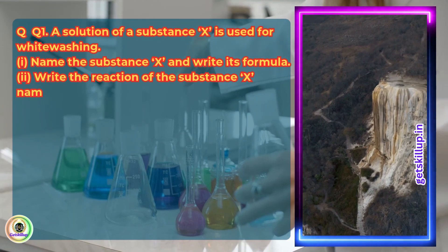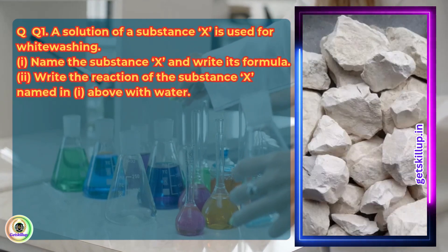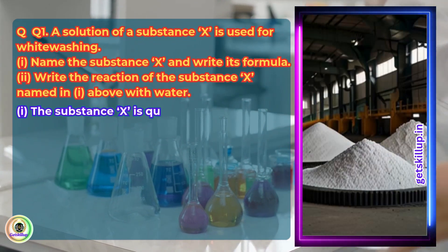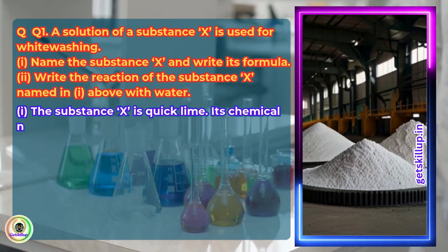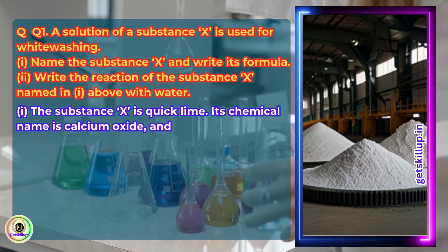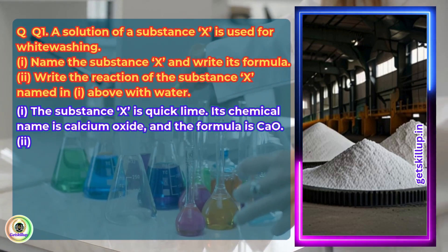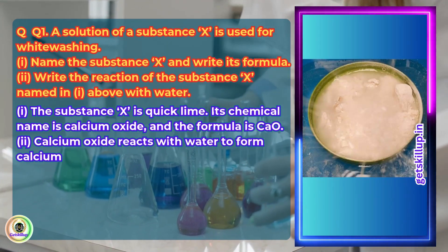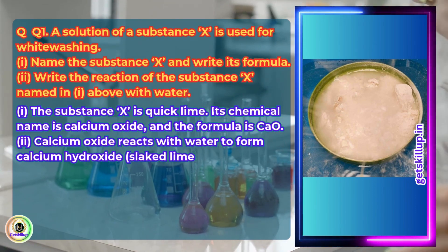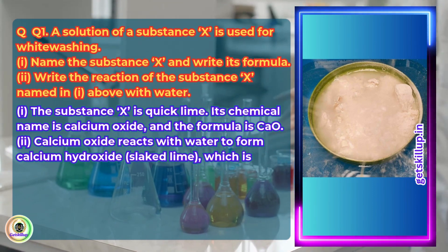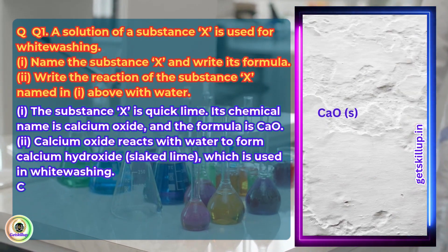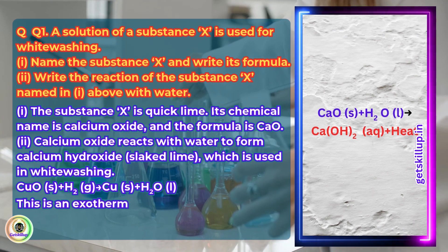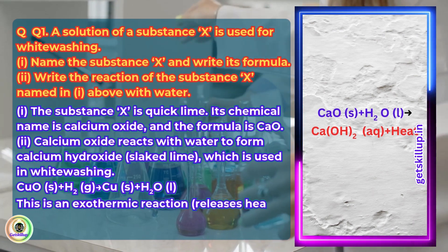Write the reaction of the substance X with water. The substance X is quick lime. Its chemical name is calcium oxide and the formula is CaO. Calcium oxide reacts with water to form calcium hydroxide, slaked lime, which is used in whitewashing. Reaction: CaO (solid) + H2O (liquid) → Ca(OH)2 (aqueous) + heat.